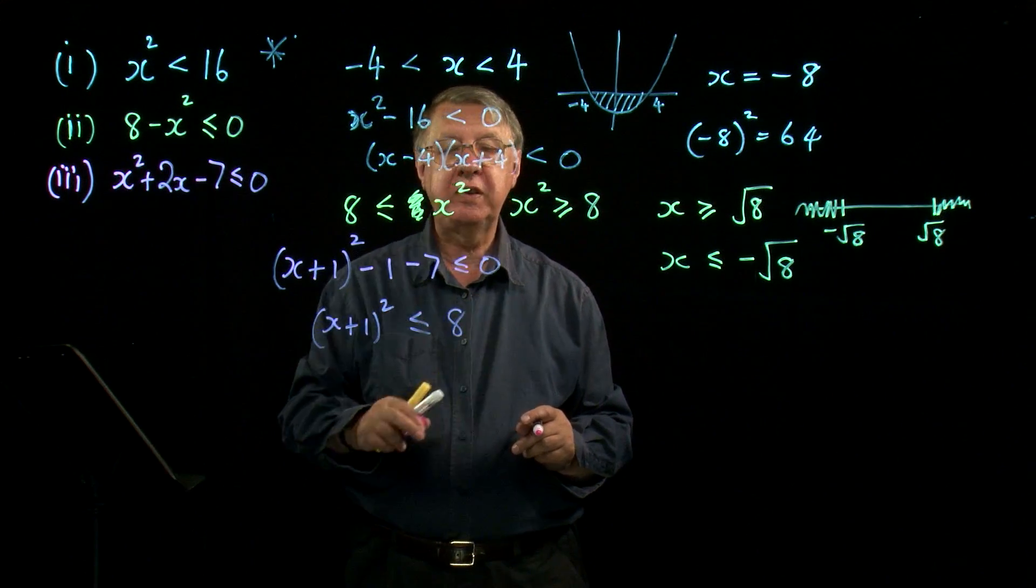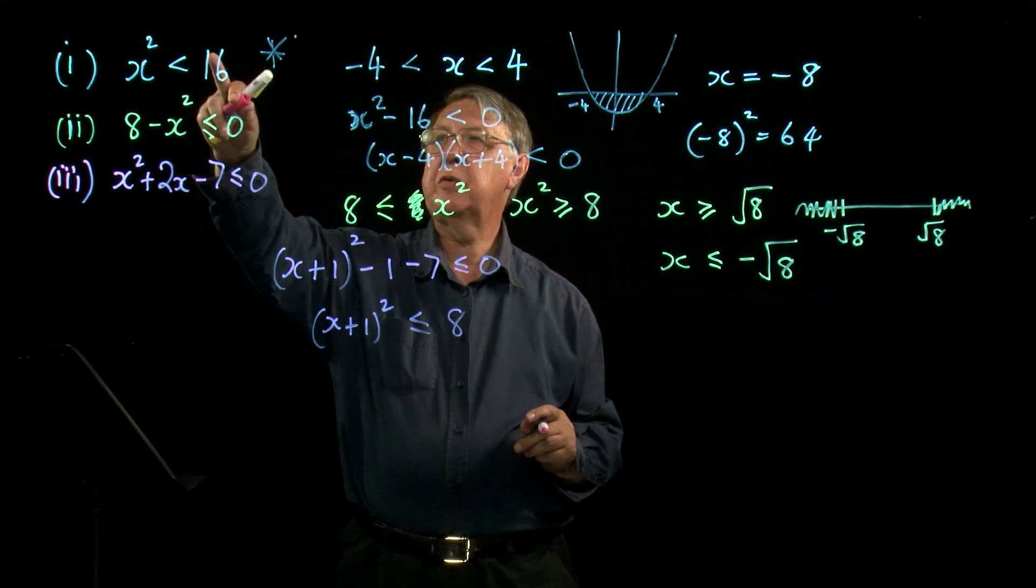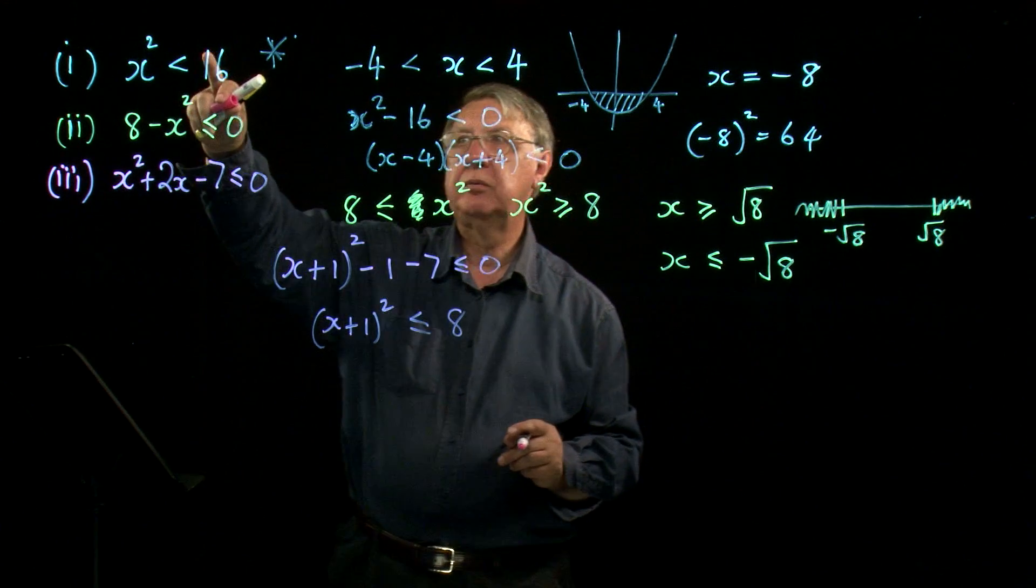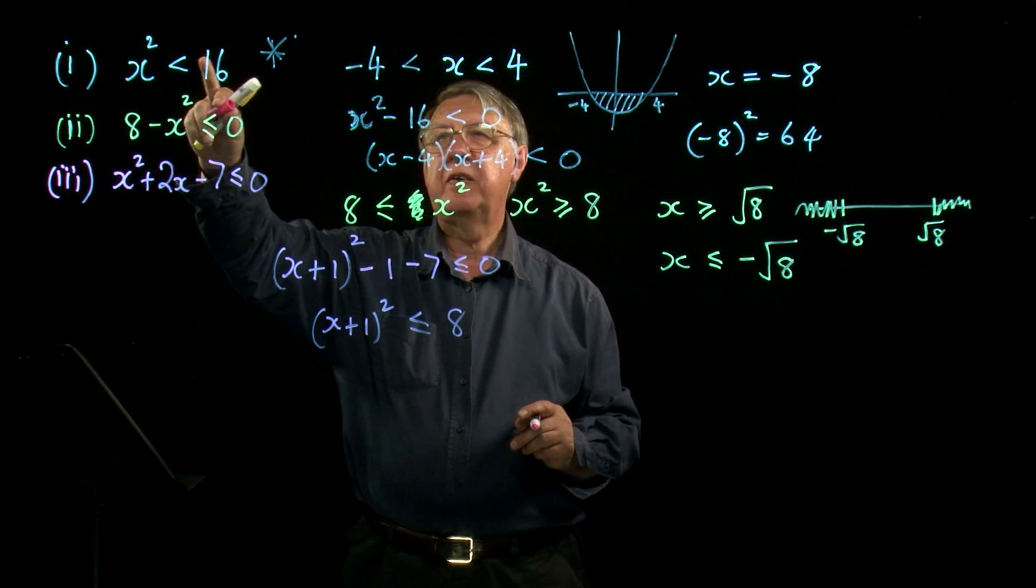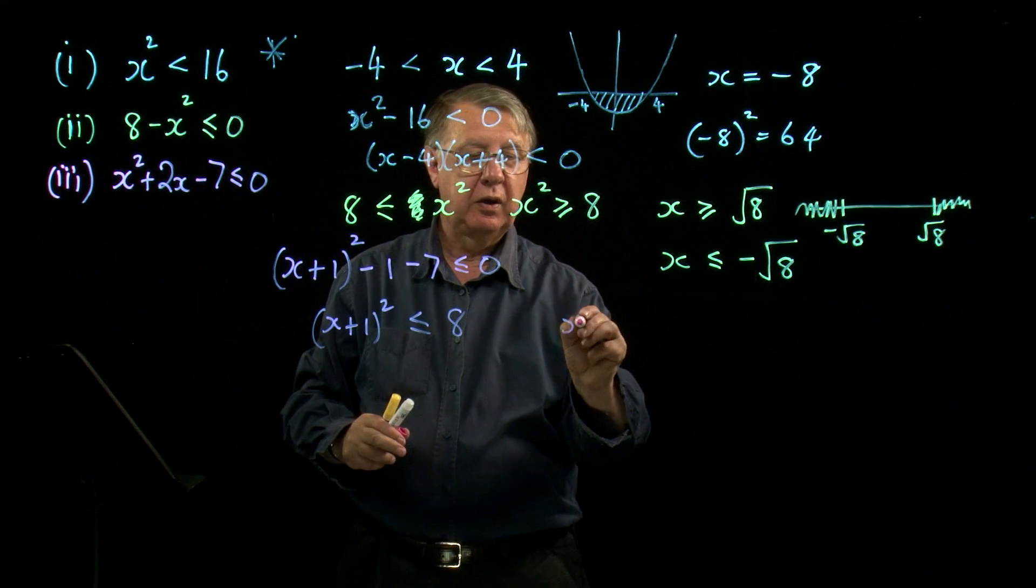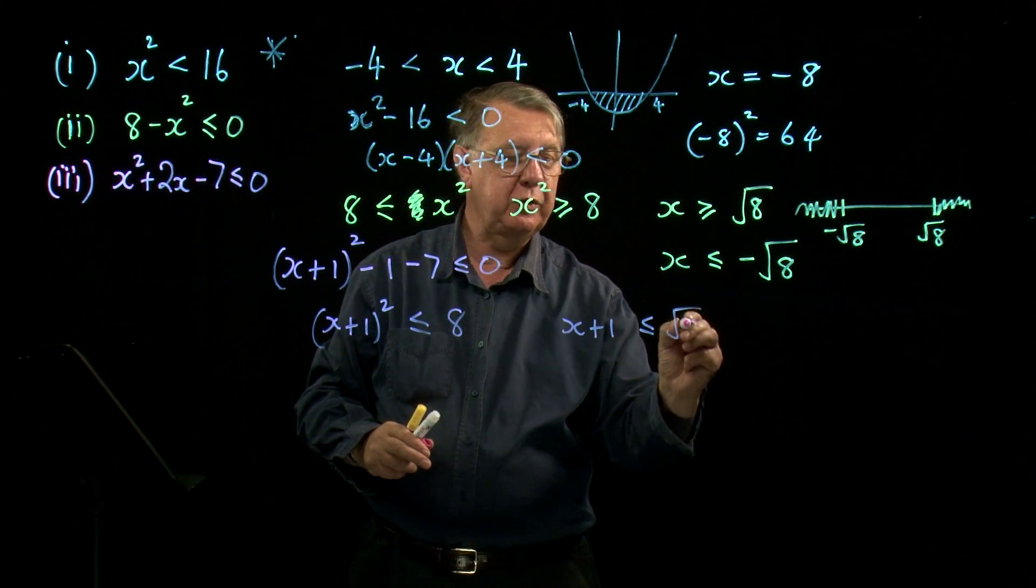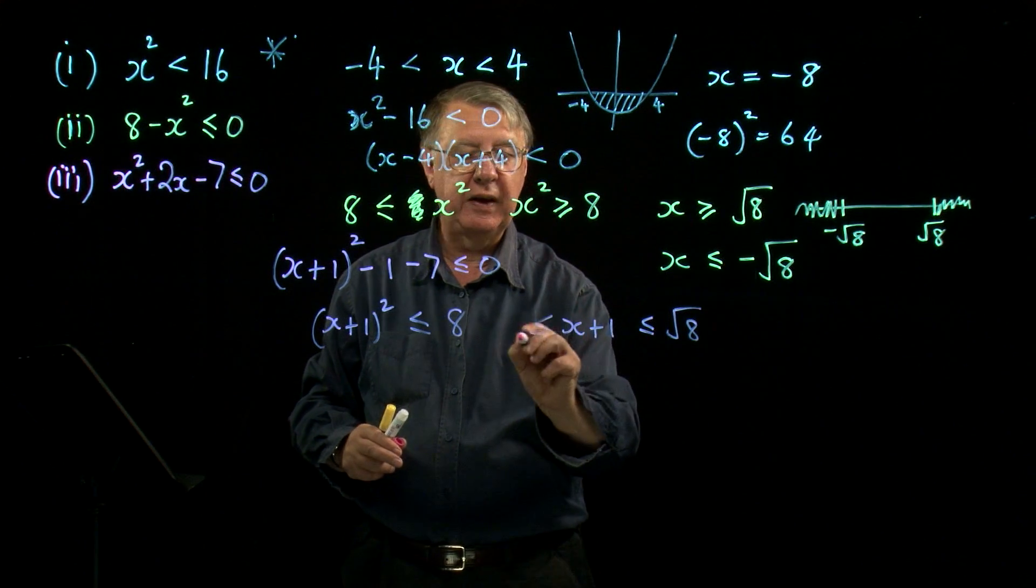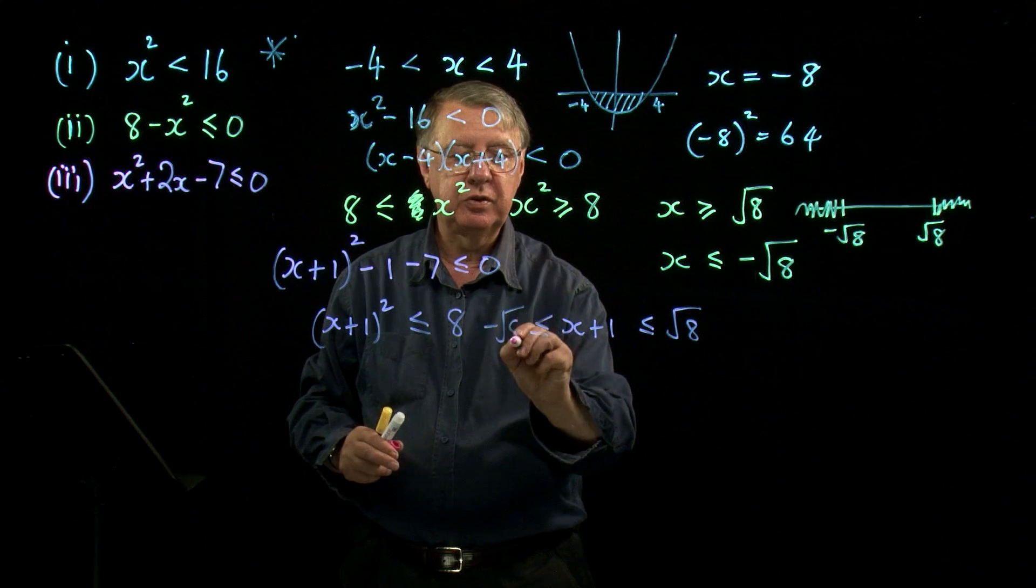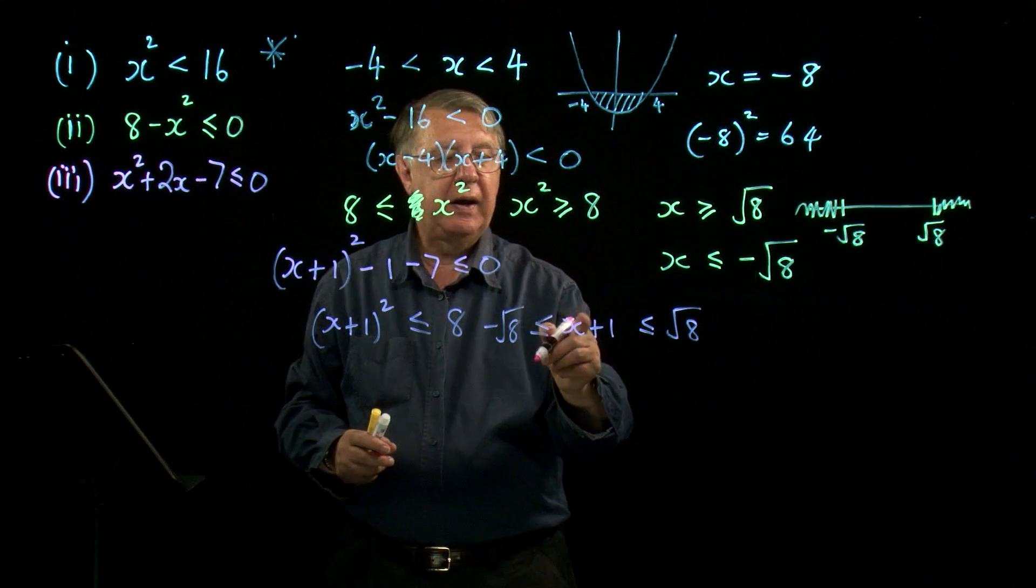What have we got? We've got a single inequality, a less than with a square, which is like the one I've just put a star by. And so this means it leads to a sandwich. What is the sandwich? Well, either x plus 1 is less than or equal to the square root of 8, or it's more than the square root, negative the square root of 8.